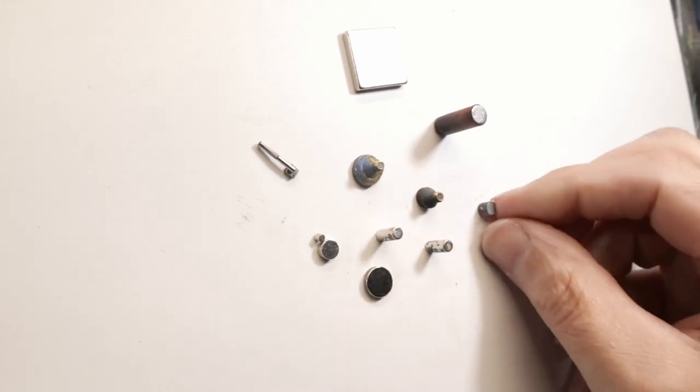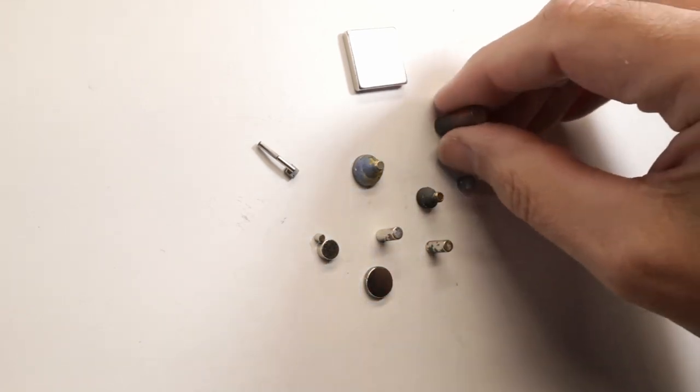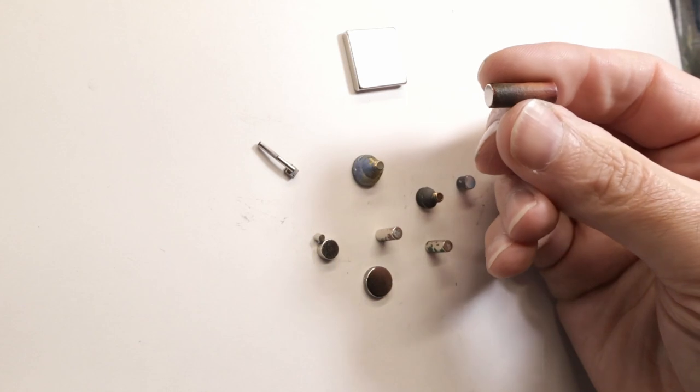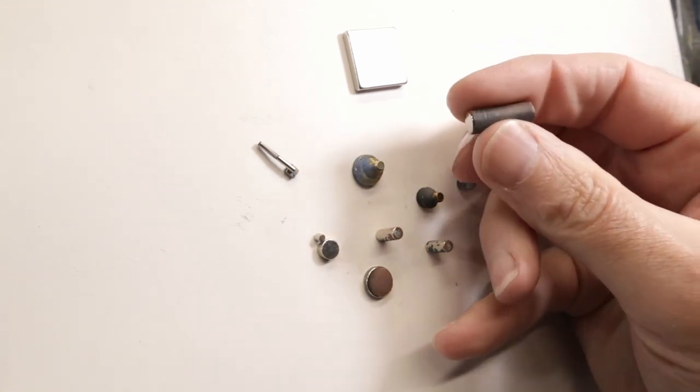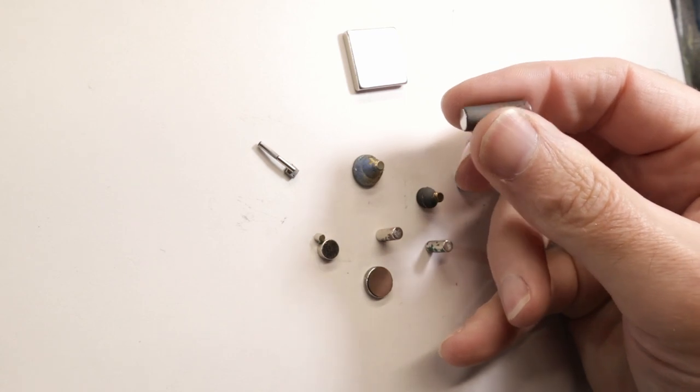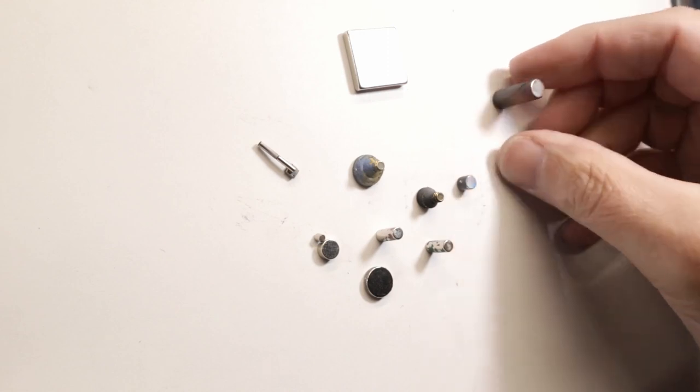Okay, so neodymium. The neodymium magnets are basically another word for them, and they're in the rare earth magnet family. There are actually three parts to these magnets: neodymium, iron, and boron. Those are the three elements that make these magnets up, and what it creates is this very, very strong magnet.